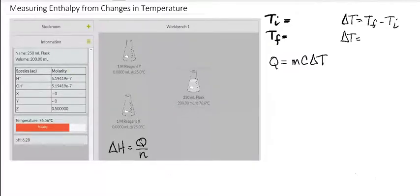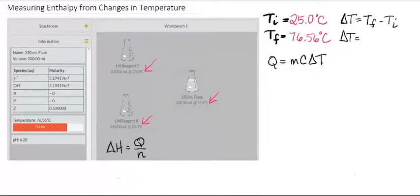So let's start with our temperature. We're going to calculate delta T. Our initial starting temperature of our reactants was 25.0 degrees C, and our new temperature is 76.56 degrees C. So delta T, when we subtract those, equals 51.56 degrees C.